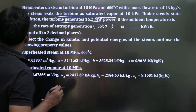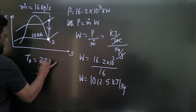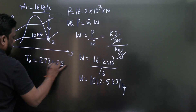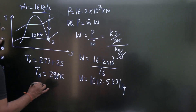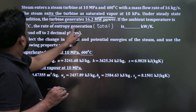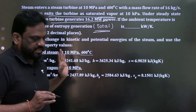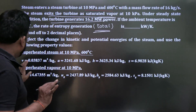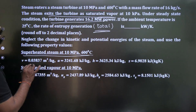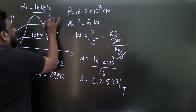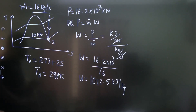The ambient temperature is 25°C, which converts to 298 K. Now we calculate the total rate of entropy generation. At the inlet — superheated steam at 10 MPa and 600°C — the properties are given from tables.